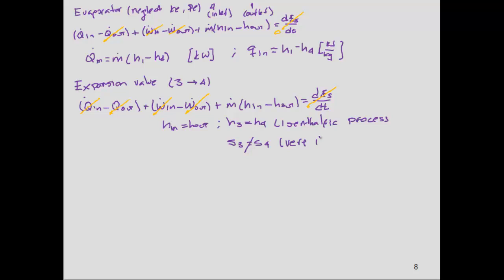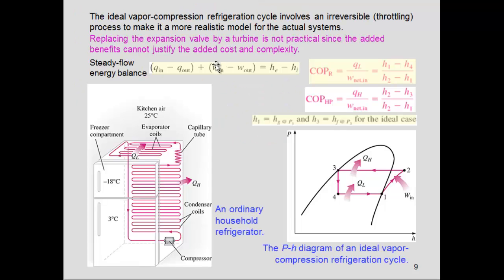This doesn't mean that entropy is constant — actually this is a very irreversible process. If we analyze the rest of the components, we can get our COP in terms of enthalpy, either for the refrigerator or the heat pump. Usually we can represent this in a pH diagram or a TS diagram.